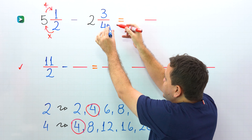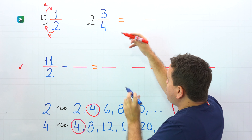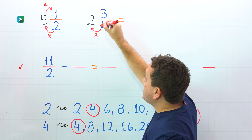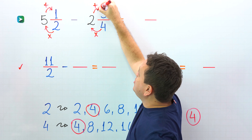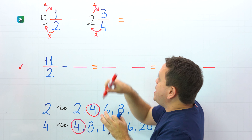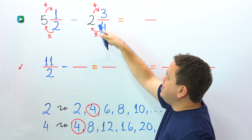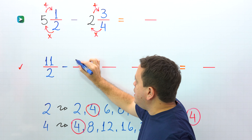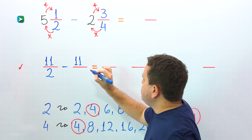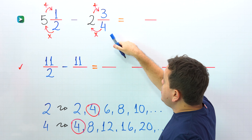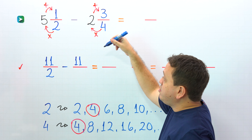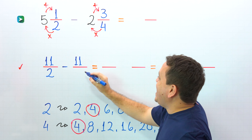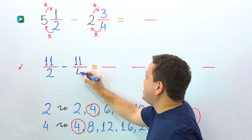To convert 2 and 3 fourths to an improper fraction, first we multiply the denominator by the whole number, and then we add this result to the numerator. 4 times 2 is 8, plus 3 gives us 11. That is correct, and then the denominator stays the same.